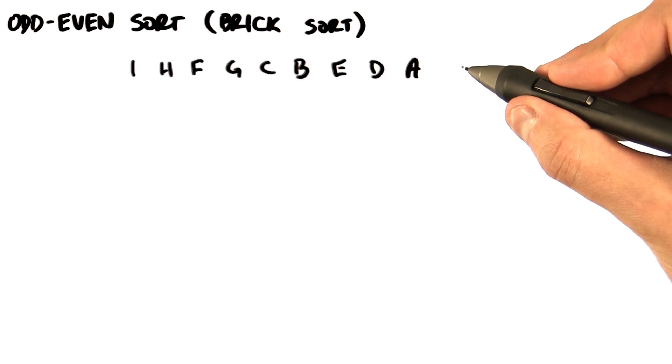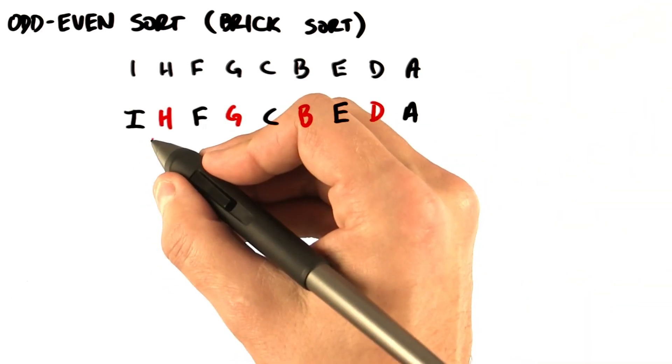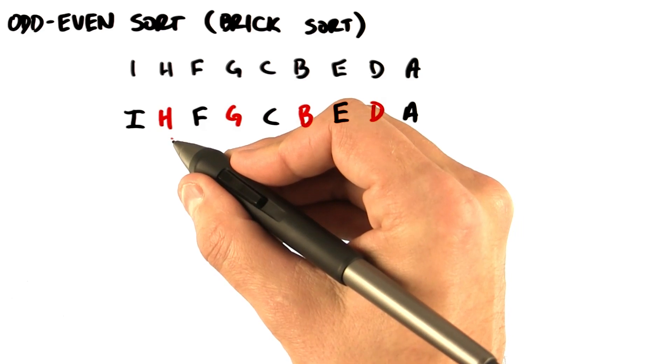So we're going to start by putting all of our elements to sort in a row, and then we're going to mark all the even elements as black, and all the odd elements as red.